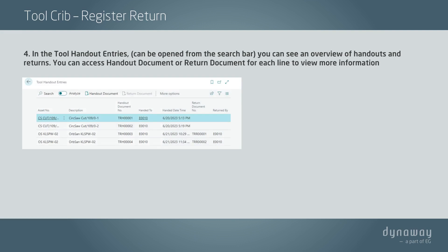In the Handout Entries, which can be opened from the search bar, you can see an overview of handouts and returns. You can access the Handout Document or Return Document for each line to view more information.